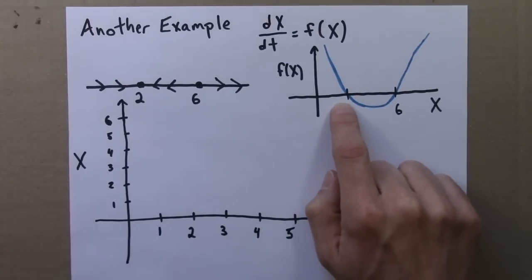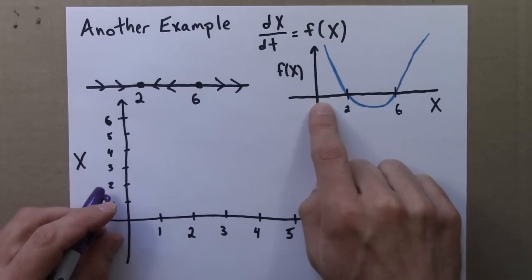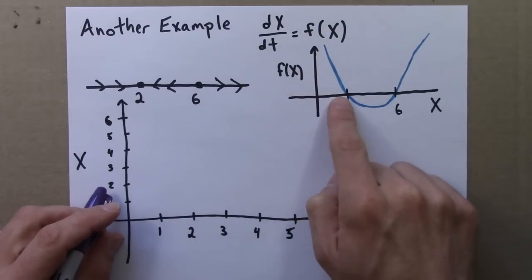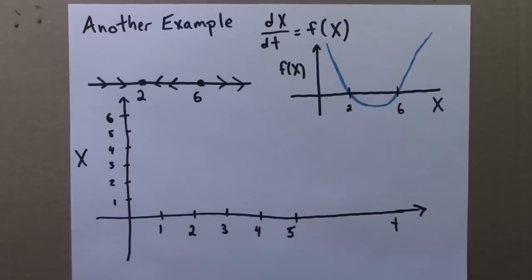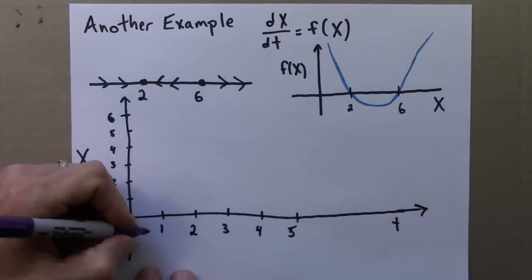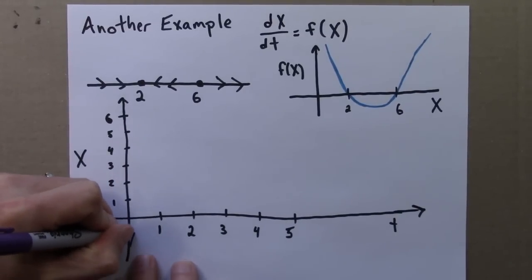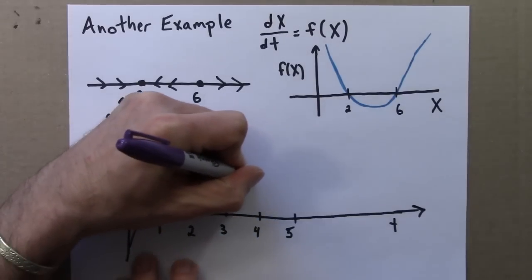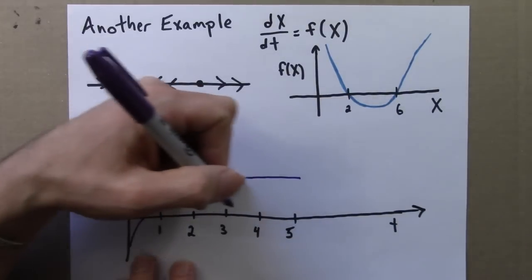Two is an attracting fixed point. If we start anywhere less than 2, it'll increase rapidly and then smoothly approach 2. If I had an initial condition down here, it would do something like that, approaching 2.